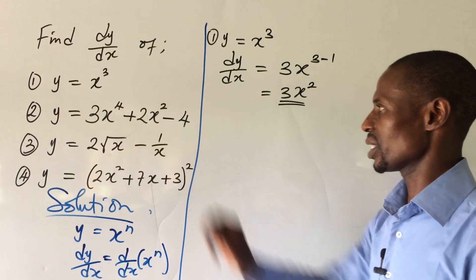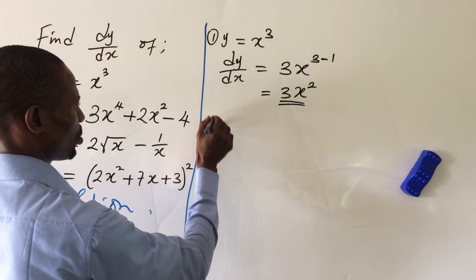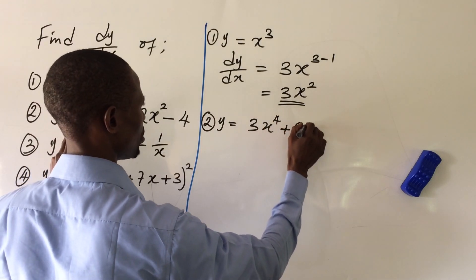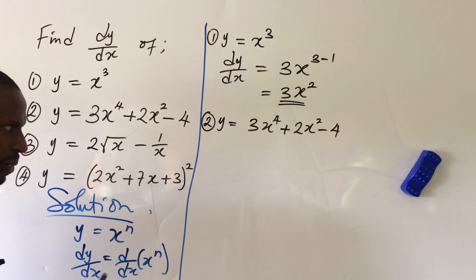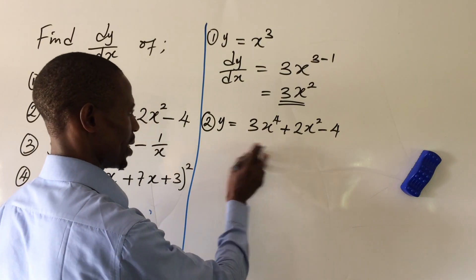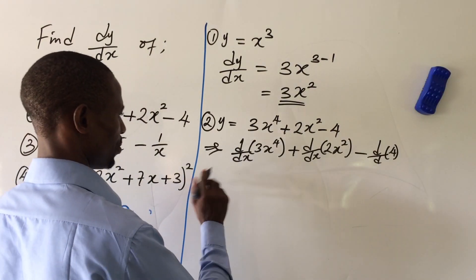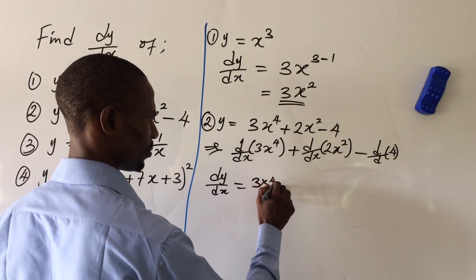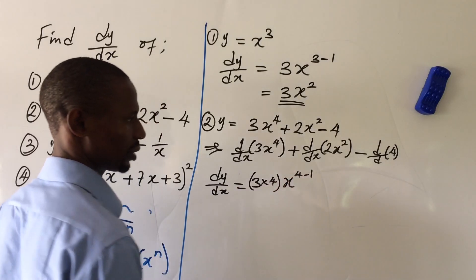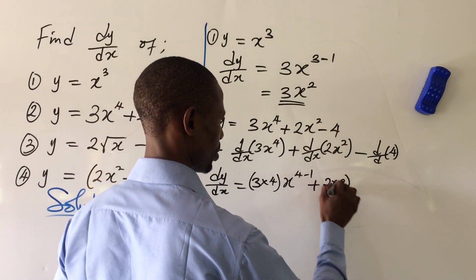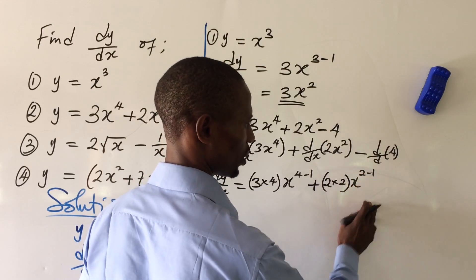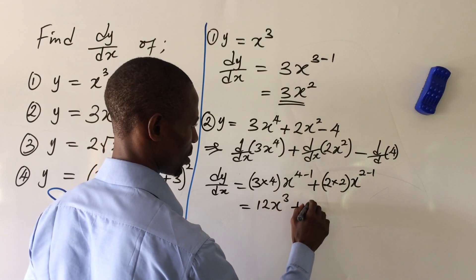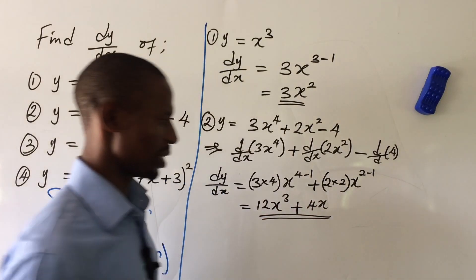For Question 2, which is a fourth-degree polynomial, the function is y = 3x⁴ + 2x² - 4. We differentiate term by term: dy/dx equals 3 times 4 times x to the power of 4 minus 1, plus 2 times 2 times x to the power of 2 minus 1, and the constant -4 differentiates to 0. This gives us 12x³ + 4x.